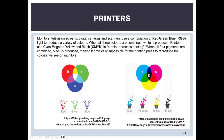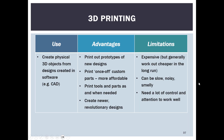Monitors, TVs, digital cameras, and scanners use a combination of red, green, and blue (RGB) light to produce colors — when all three are combined, white is produced. Printers, however, use cyan, magenta, yellow, and black (CMYK) in a four-color process. When all four are combined, black is produced, making it physically impossible for printers to exactly reproduce colors seen on monitors.